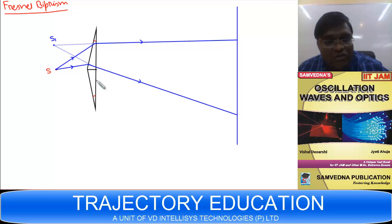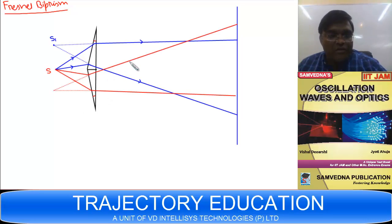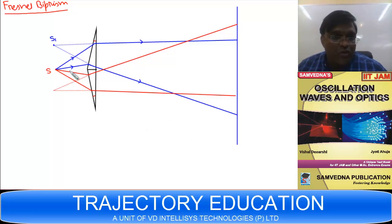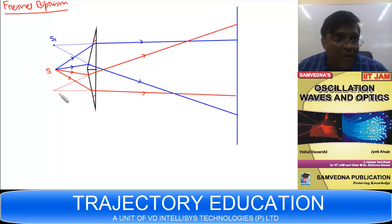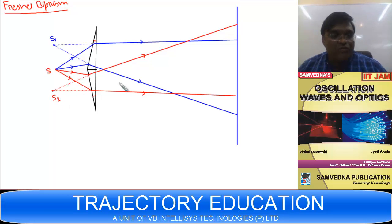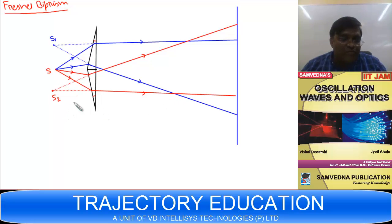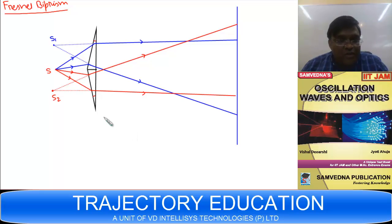Similarly, showing the refraction through the lower prism, the light rays appear to be coming from a virtual source S2. So S1 and S2 can be treated as two virtual sources.